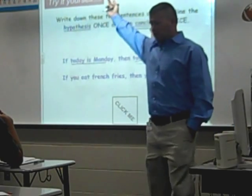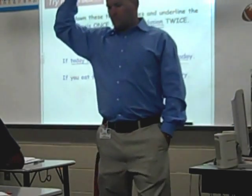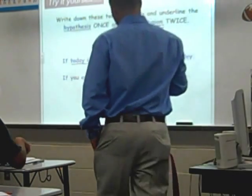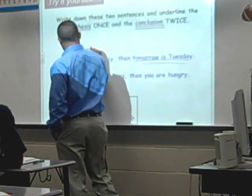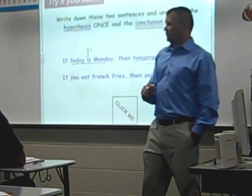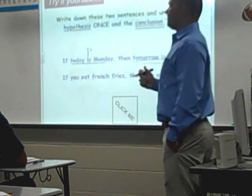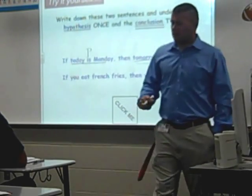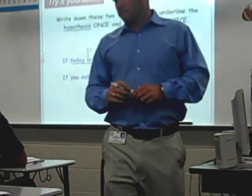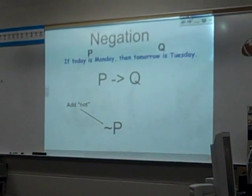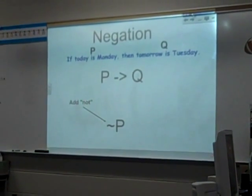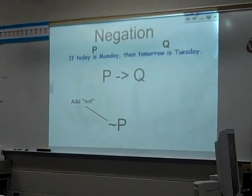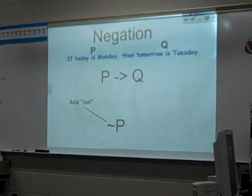We also need to label it P or Q. What's going to get labeled P? Today is Monday is going to get labeled P because P is the hypothesis. Then what's going to get labeled Q? Tomorrow is Tuesday — Q is the conclusion. So our original statement is: if today is Monday, then tomorrow is Tuesday. So we have P, then Q.